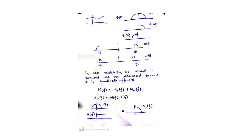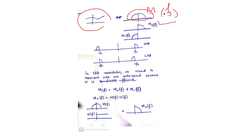Now, how do we use the Hilbert transform in modulation? For a message signal M(f), we can divide it into M+(f) and M-(f). If we modulate the positive side, it shifts to the carrier frequency f_c — this gives us the upper sideband. Similarly, modulating M-(f) shifts it, giving us the lower sideband. We can call these upper sideband (USB) and lower sideband (LSB) modulation.